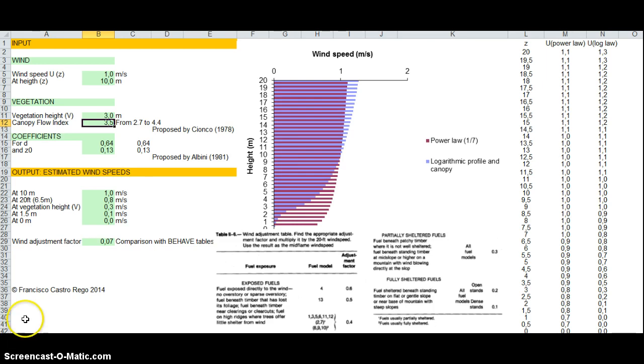Here, for instance, you have wind speed of 1 meter per second at 10 meter height. What we're interested in is converting this wind speed to a useful wind speed for fire behavior. We have two different possibilities.